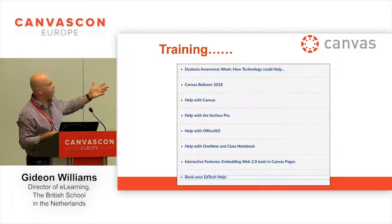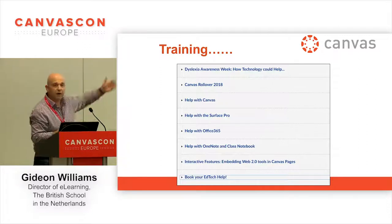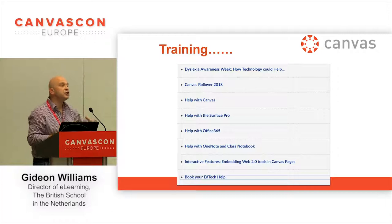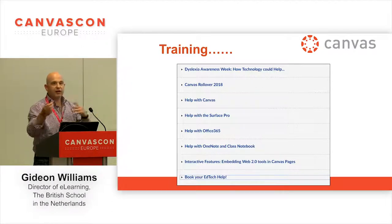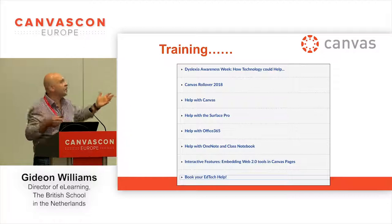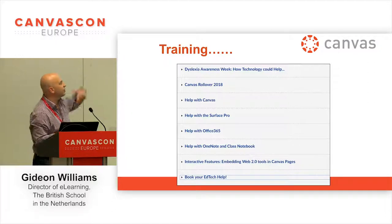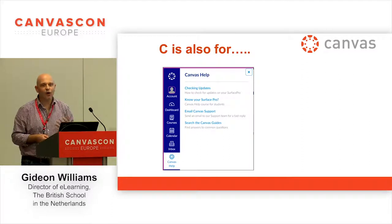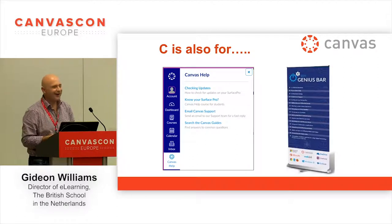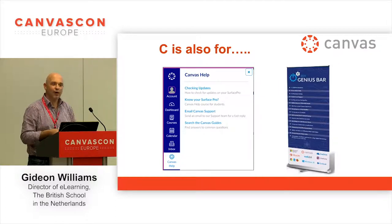All our staff training kind of looks like this — there was a great comment about making staff into students, so all staff become students when they do the training, and they get to see what it's like as a student. We often have one course up where there are teachers and one course with their pupils. We also have remote training resources where people can go and look in their own time, with lots of video guides and help guides. And not forgetting that C is also for our children, our students — we've employed a genius bar where students man it and support other students and staff with a whole range of EdTech issues.